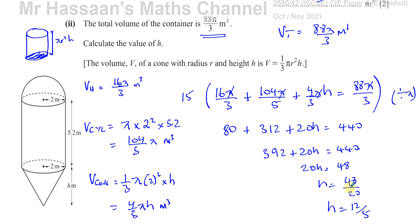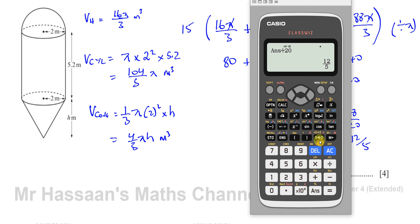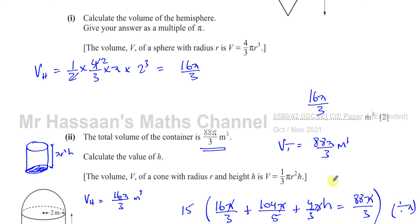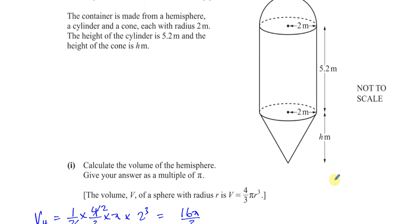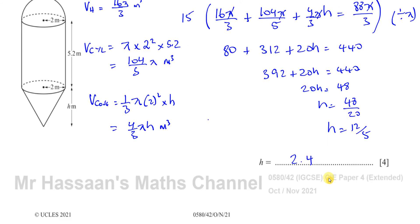12/5 = 2.4, so h = 2.4 meters. That's the answer for part one and part two of this question.